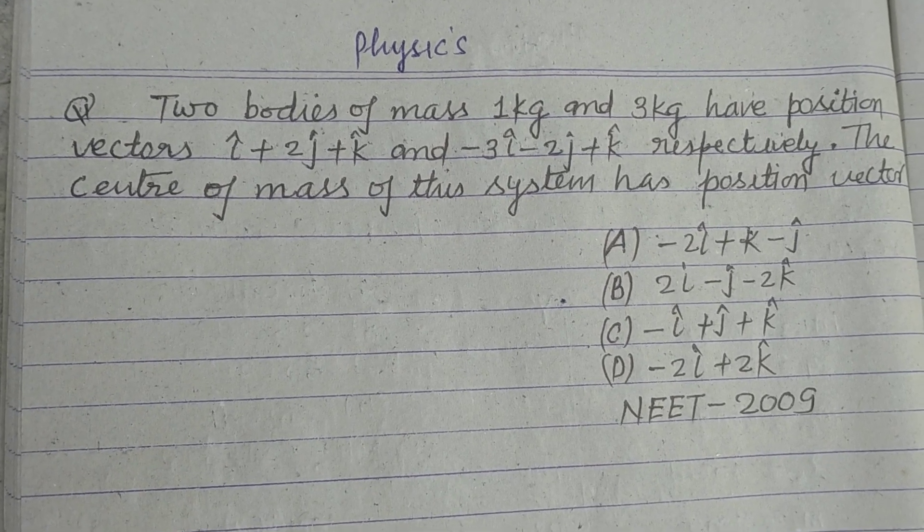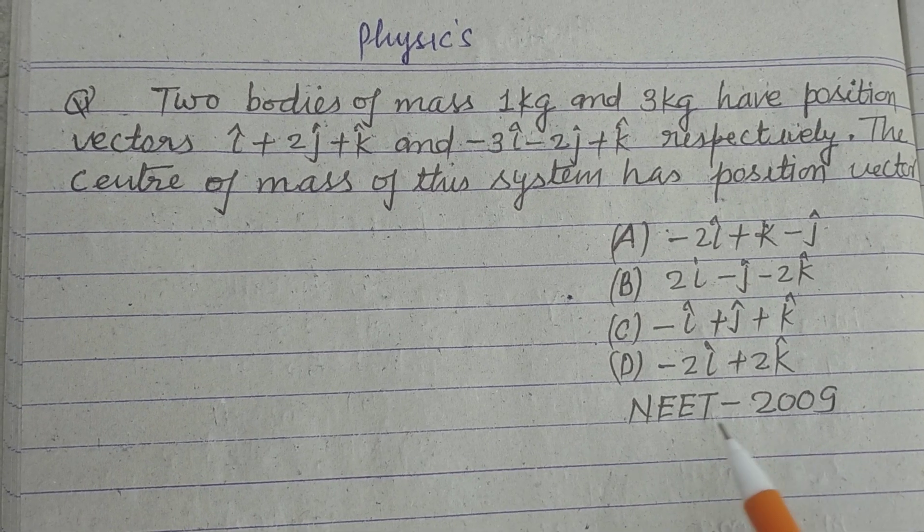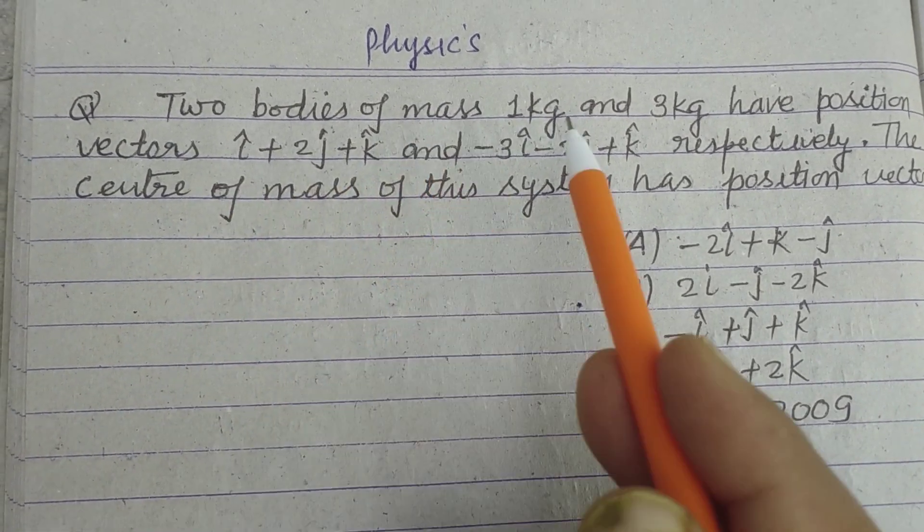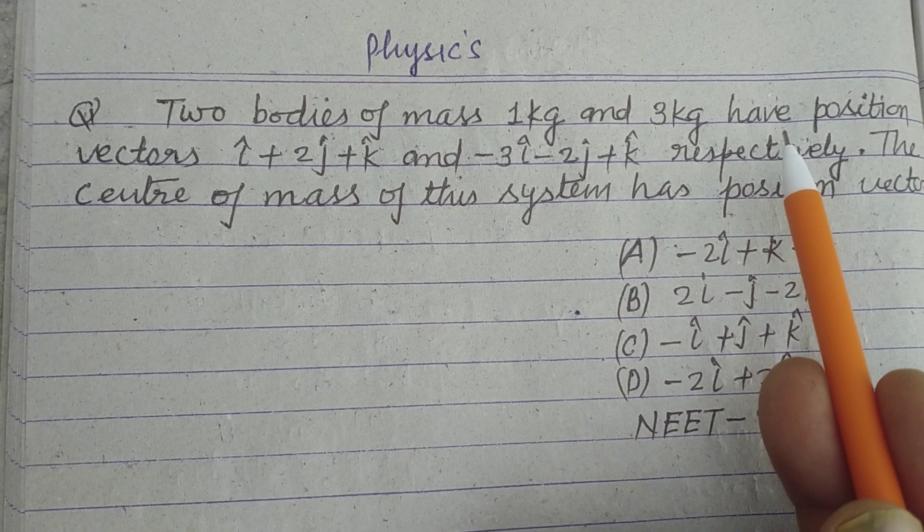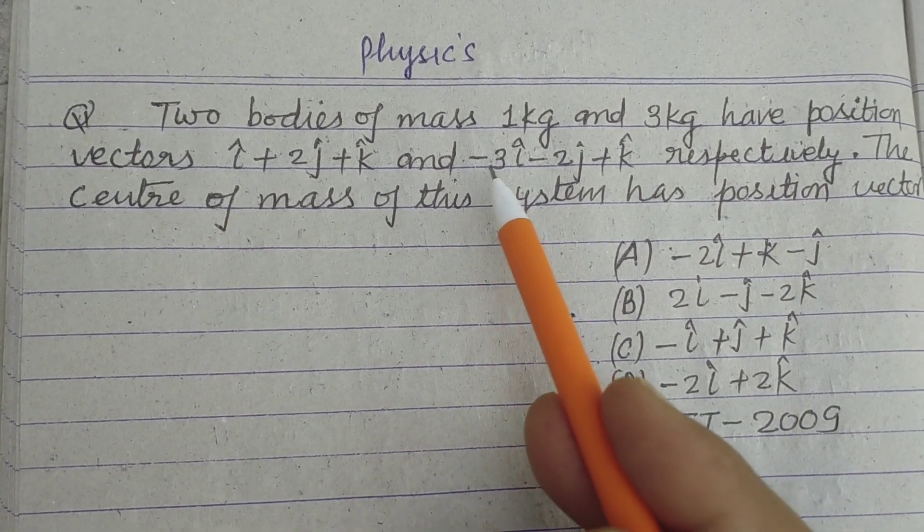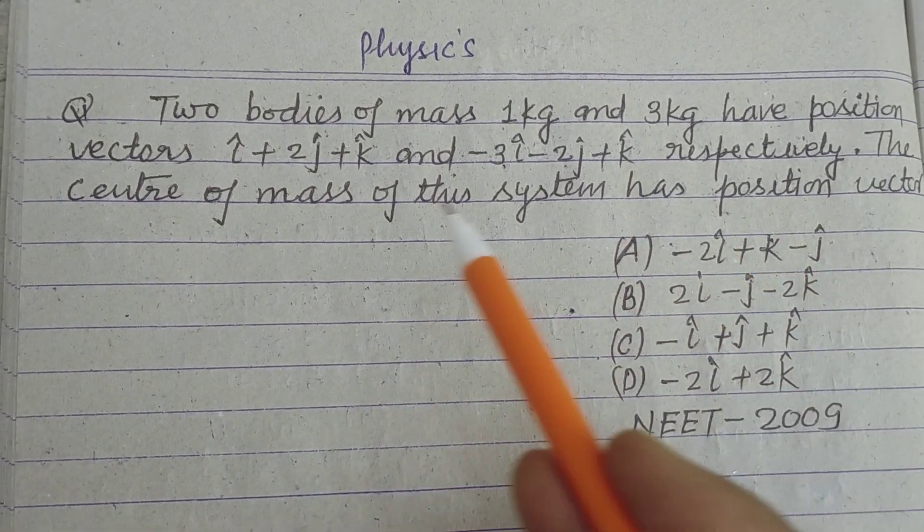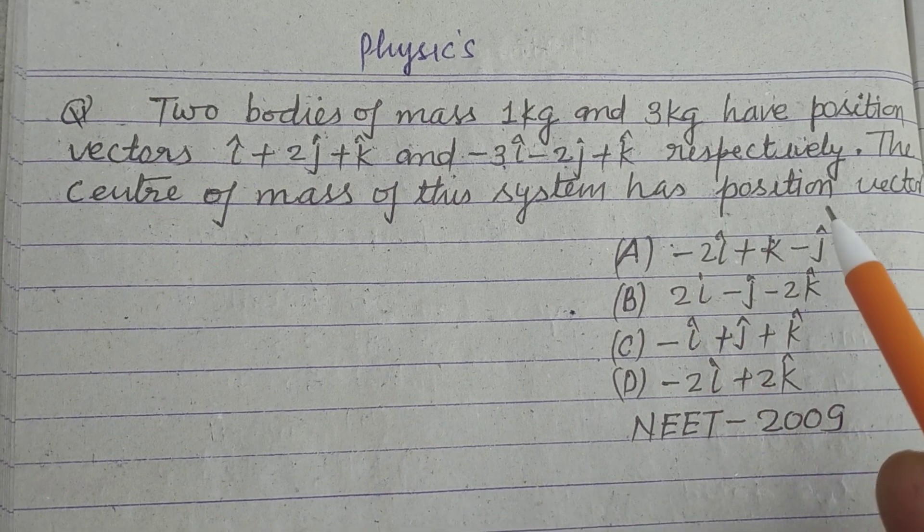Hello students, warm welcome to this YouTube channel. This is a question from NEET 2009. Two bodies of mass 1 kg and 3 kg have position vectors i + 2j + k and -3i - 2j + k respectively. The center of mass of this system has position vector...